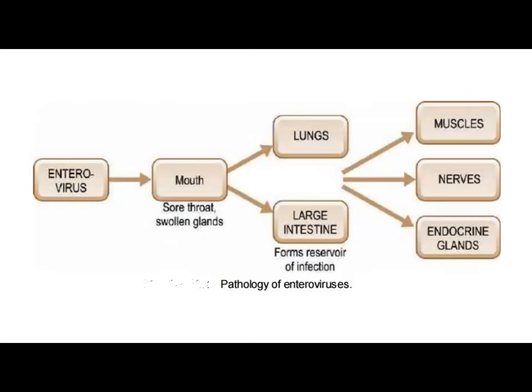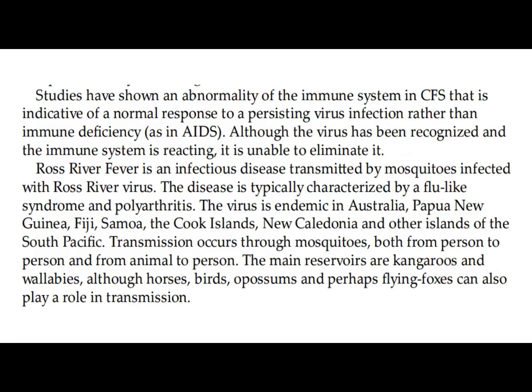Here we have the diagram showing the pathology of enteroviruses. It enters via airborne transmission, goes into the mouth causing sore throat and swollen glands, then to the lungs and large intestine. In the large intestine it forms the reservoir of infection, and the effect is seen in the muscles, nerves, and endocrine glands. Studies have shown an abnormality of the immune system in CFS indicative of a normal response to a persisting virus infection rather than immune deficiency as in AIDS. Although the virus has been recognized and the immune system is reacting, it is unable to eliminate it.